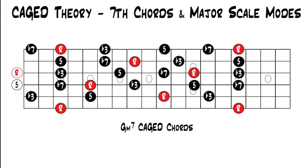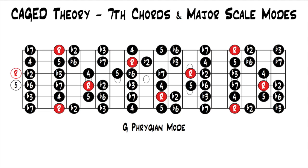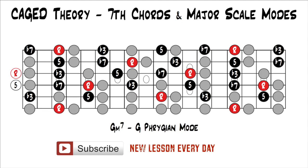Minor seven also works with another mode. Here are the G minor seven cage chords up and down your whole fretboard again. We could use the Phrygian mode — all those minor sevens fit within the Phrygian mode, which looks like this. You have all your minor seven chords highlighted in red and black, and then the rest of your Phrygian mode in gray. So again, you can play the chord and then add in little fills or licks.